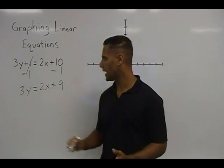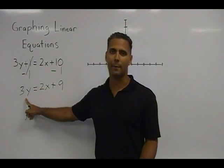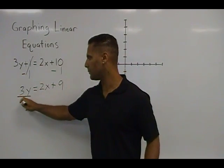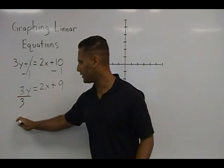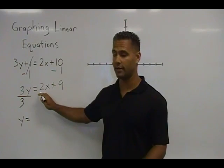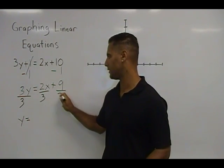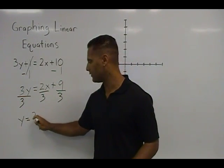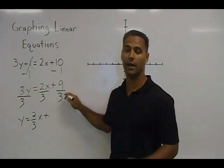The next step is to try to isolate the y by getting rid of this 3. Because y and 3 are being multiplied, we do the opposite which is to divide by 3. So we are going to divide this side by itself — anything divided by itself is 1 — and so we have exactly 1y remaining. Now every term on the right has to be divided by 3. So 2x must be divided by 3 and 9 must also be divided by 3. 2 thirds is already a simplified fraction, so we are going to leave that as 2 thirds x plus 9 divided by 3, which is 3.